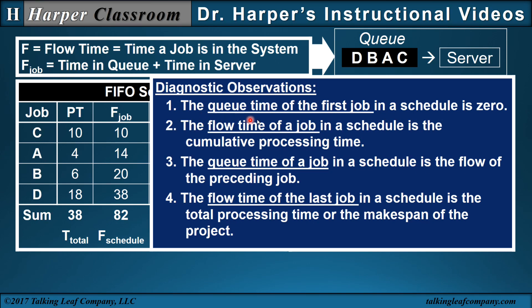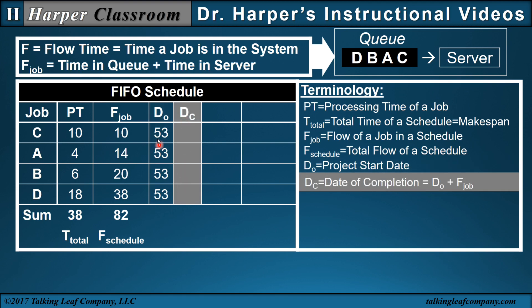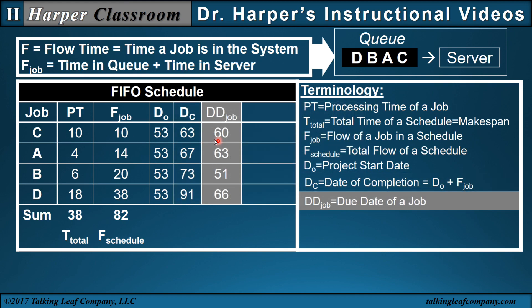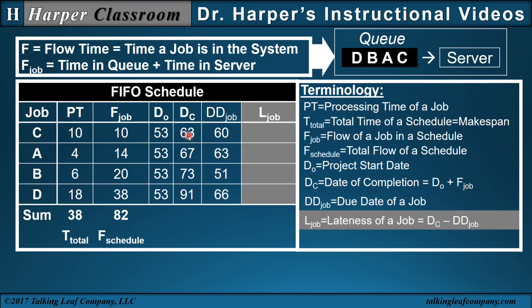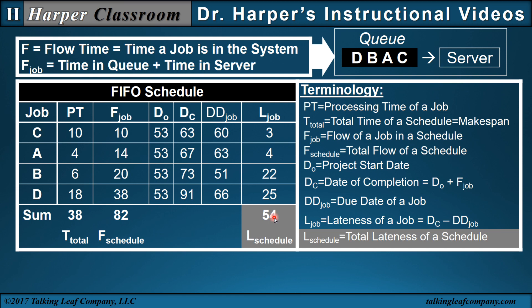Diagnostic observations: the queue time of the first job in a schedule is always zero; the flow time of a job in a schedule is the cumulative processing time; the queue time of a job is the flow of the preceding job; and the flow time of the last job is the total processing time, or the make-span, of the project. We also have the project start date, and the date of completion, which is the project start date plus the flow. The due date of a job is given. The lateness of a job is the date of completion minus the due date — how many days the job is late in this schedule. We can sum the lateness to get the total lateness of the schedule.